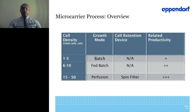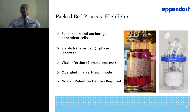Comparing microcarrier densities achievable: for a typical batch with microcarriers you get about 1 to 3 million cells per mL. For fed-batch you can get 6 to 10 million cells per mL. For perfusion using a spin filter you can get 15 to 50 million cells per mL, giving you the most productivity. Next is packed bed technology — a patented Eppendorf technology able to accommodate both suspension and anchorage-dependent cells.